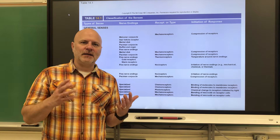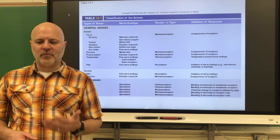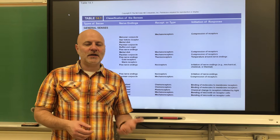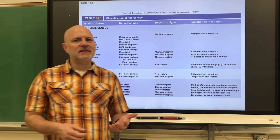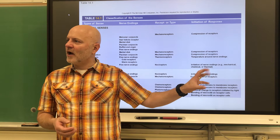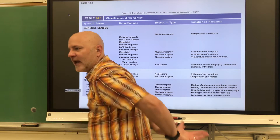Visceral receptors sense chemical changes like oxygen and carbon dioxide levels in the blood, tissue stretch, and temperature. Their activity causes us to feel pain, pressure, hunger, or thirst. Lastly are proprioceptors. These receptors occur in skeletal muscles, tendons, joints, and ligaments, and in connective tissue covering bone and muscle. They send signals to our brain about body movements and positions. For example, even with my hand behind my back, I know I'm contracting my fingers into a fist and wiggling them because of proprioception.